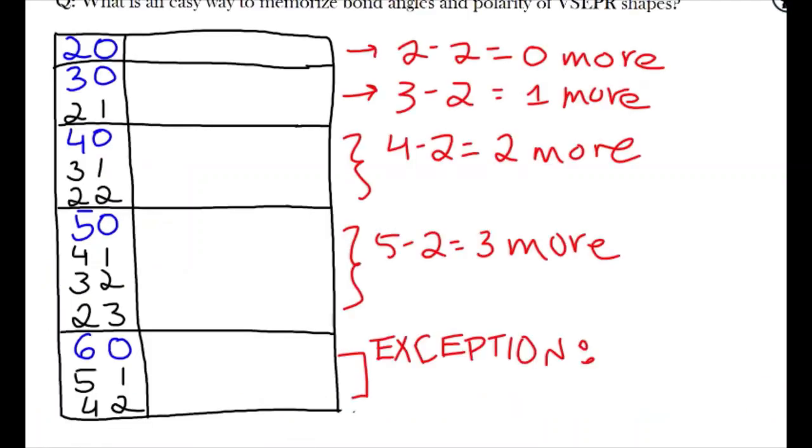If we write this out for every main row, we get this pattern. Now, 6-0 is the only exception to the minus 2 rule. Here, we stop after 2 rows after the main one.